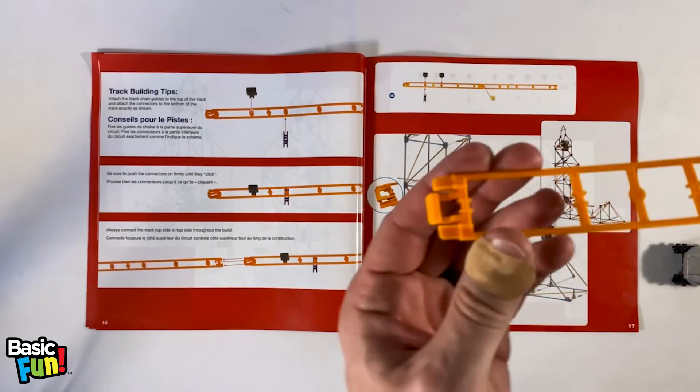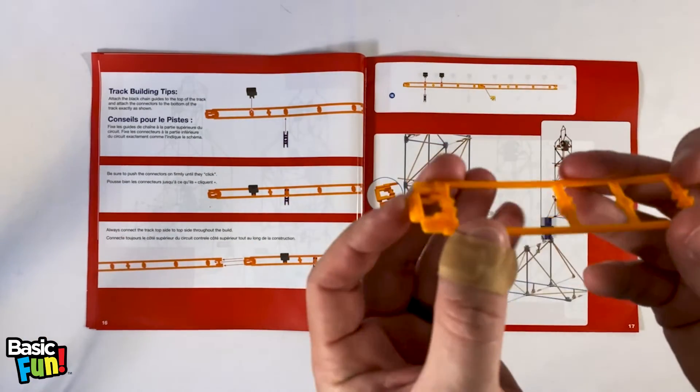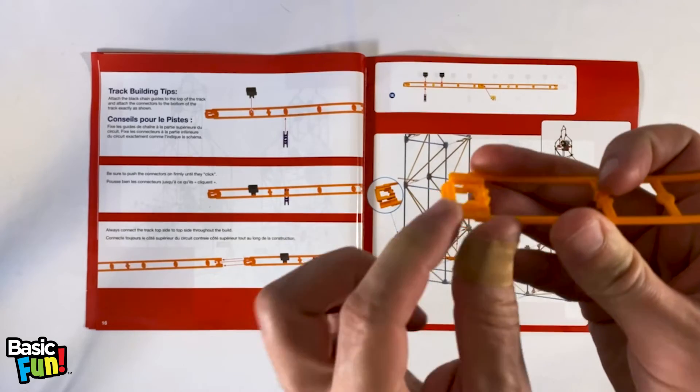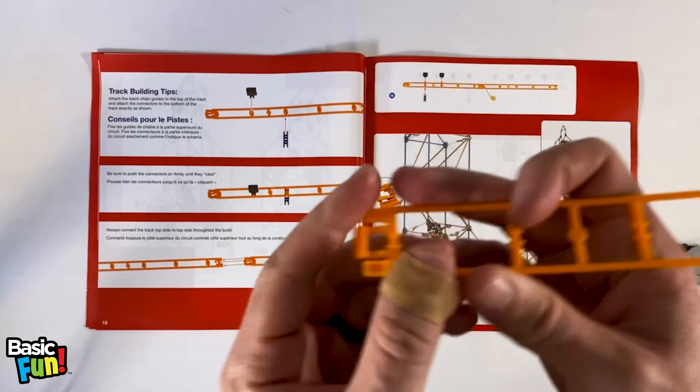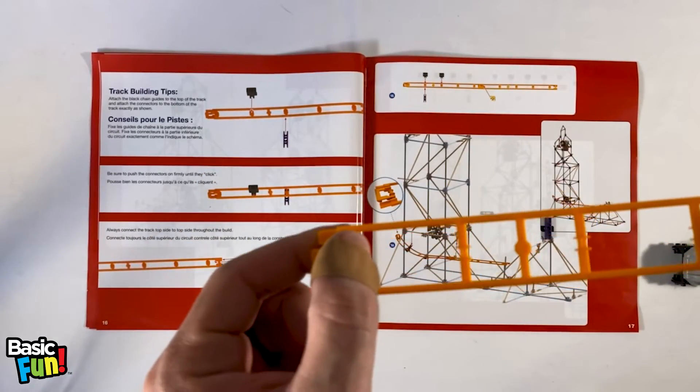There's a top side of the track, which is this here. It's indicated by this nub on this connection point. And then this is the bottom side of the track.